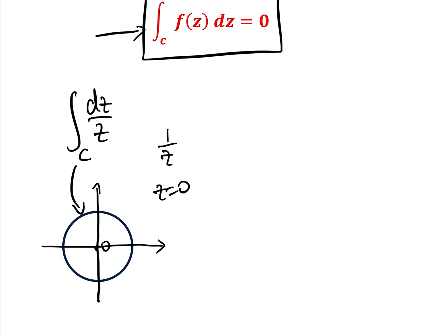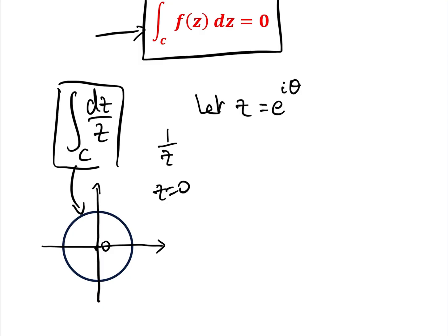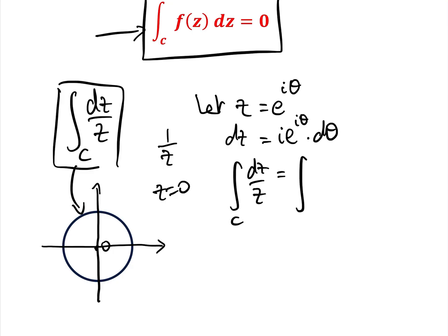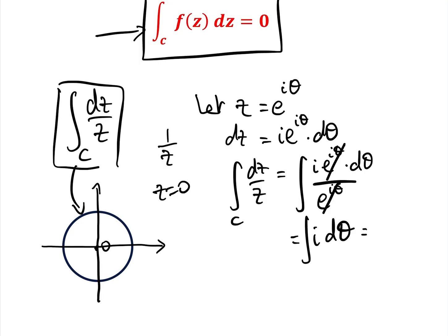Because there is a singularity at z equals zero, we can't use Cauchy's Theorem on this integral. So we evaluate it using a substitution. Let z equal e to the i theta, therefore dz equals i e to the i theta d theta. The integral of dz over z around that curve becomes the integral of i e to the i theta d theta over e to the i theta; the e to the i theta cancels, giving the integral of i d theta, which equals i theta evaluated between limits.